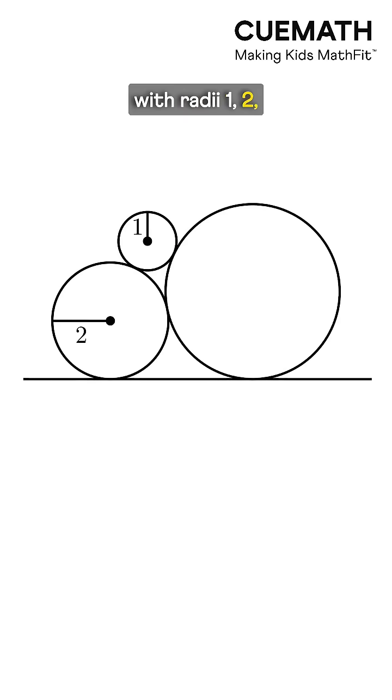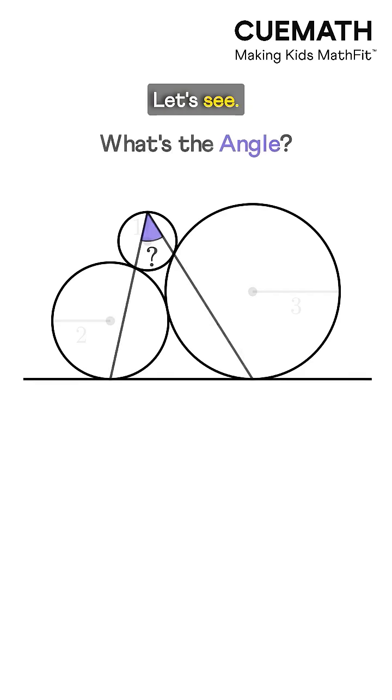Three circles with radii 1, 2, and 3 are tangent to each other. What's this angle? Let's see.